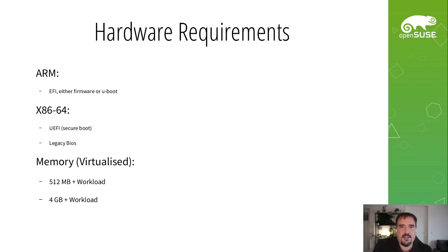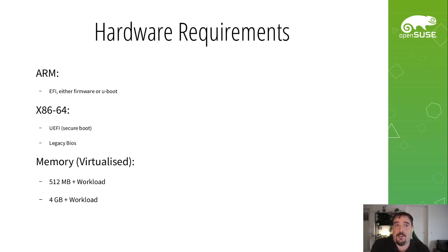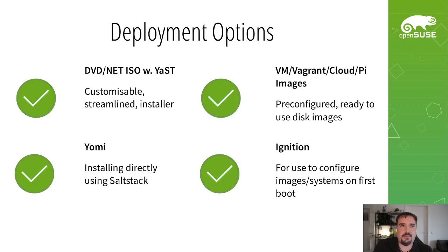The main architectures supported on MicroOS are ARM — which is in some respects the main one, with ARM themselves contributing directly to MicroOS — and x86-64. Basically any ARM64 hardware is fully supported, whether uboot firmware or anything with EFI. On the x86-64 side it can be UEFI with Secure Boot or legacy BIOS. The memory requirements are relatively small: 512MB of RAM for the operating system plus whatever you need for the workload, and four gigabytes of disk space, though the actual footprint is a little less — we say four gigabytes to give headroom for snapshots, backups, and logs.